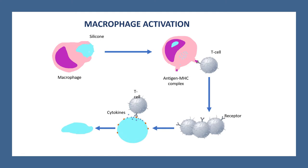The inflammation process is going to depend on the macrophage activation. The monocyte is going to be transformed into a macrophage, and the macrophage is going to phagocytose the silicone particle and form a complex here. We have the foam macrophage, and this is the key to diagnosing breast implant illness.